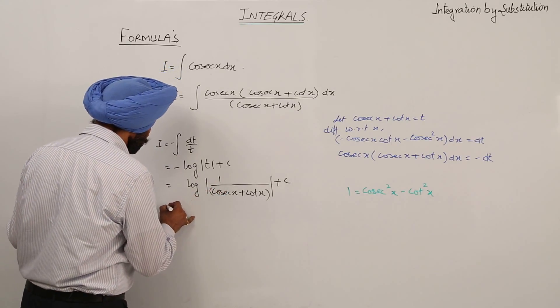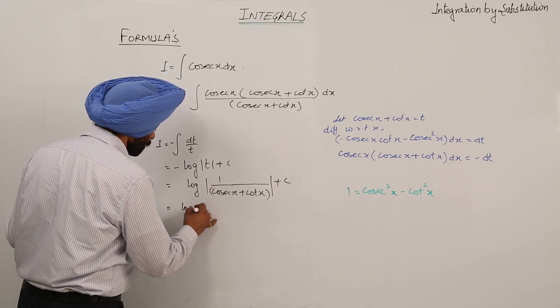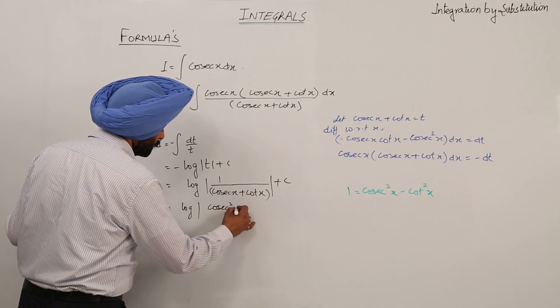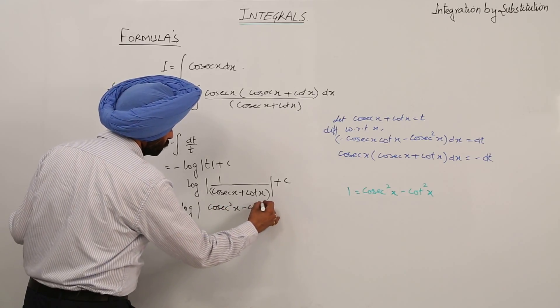So now in place of this 1, what we are writing? We are writing log cosecant square x minus cot square x.